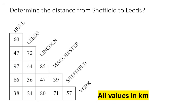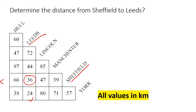This one says determine the distance from Sheffield to Leeds. With Leeds, you go down, and then with Sheffield you go across, so that they intersect at 36. So the answer would be 36 kilometers.